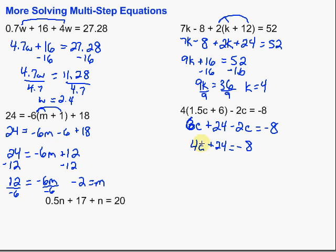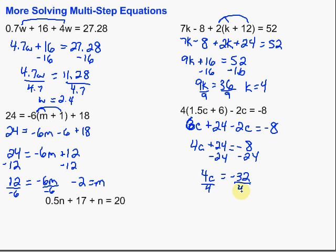We want to get that c by itself, so we need to get rid of the plus 24. We do the opposite on both sides: 4c is left on one side, and negative 8 minus 24 gives us negative 32. Then finally, we divide by 4 on both sides, and we're left with c equals negative 8.